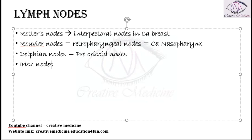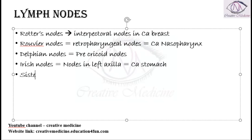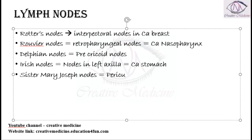Then we have Irish nodes. Irish nodes are nodes in the left axilla, and they are seen in carcinoma stomach. Then we have Sister Mary Joseph nodes. Sister Mary Joseph nodes are actually periumbilical nodes.